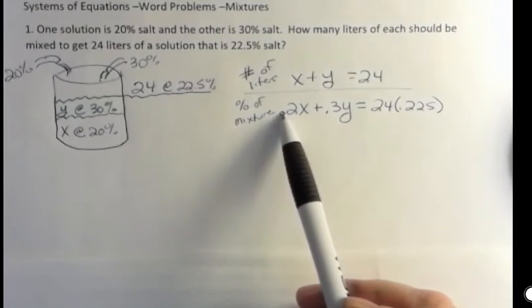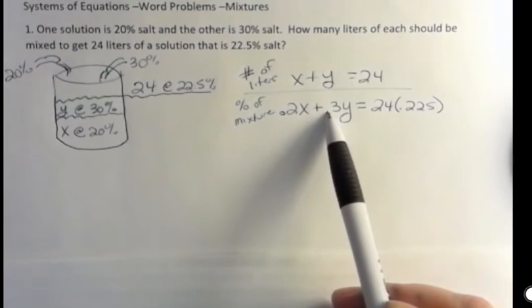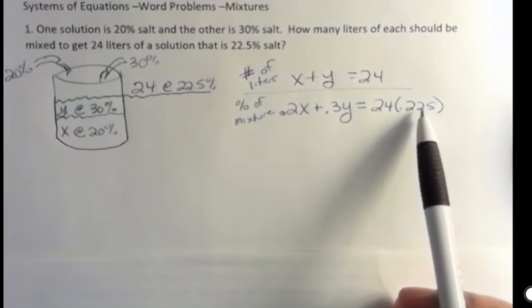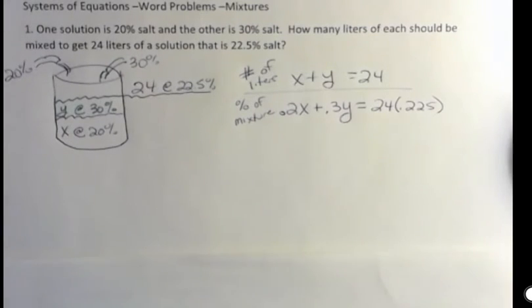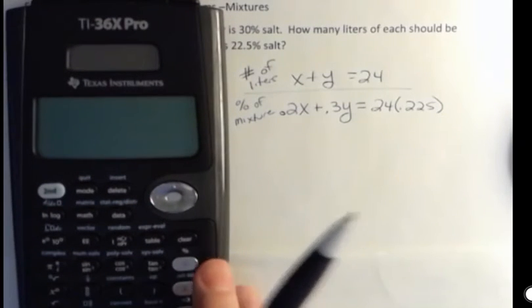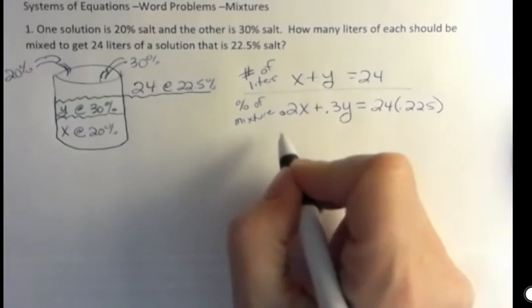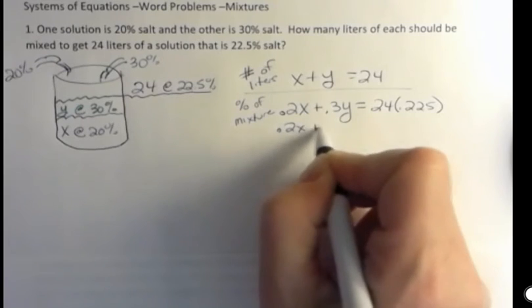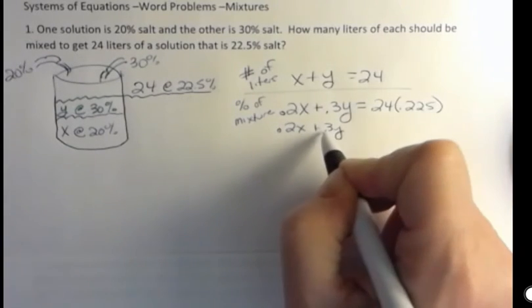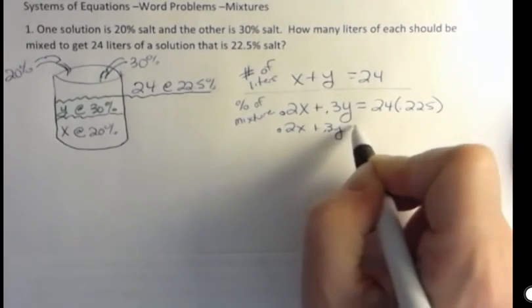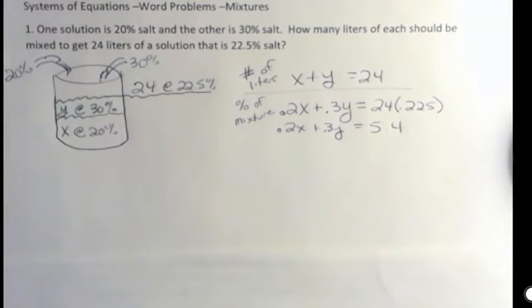This is the percent of salt in the X, percent of salt in the Y, and the percent of salt that we want to end up with in our final 24 ounces. Now I'm going to make this a little simpler by multiplying 24 times 0.225. And that gives me 5.4. So that makes my equation a little nicer. 0.2X plus 0.3Y equals 5.4.